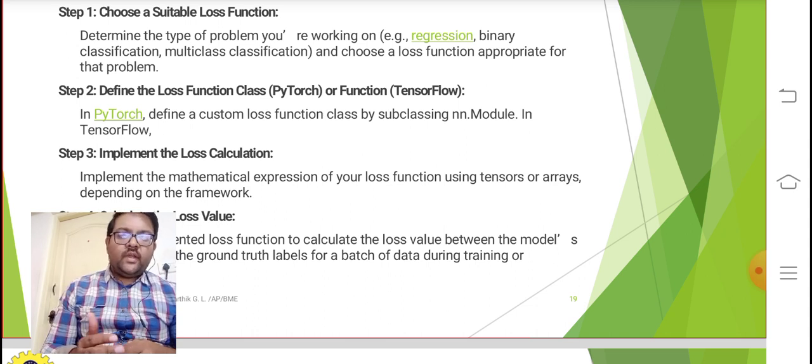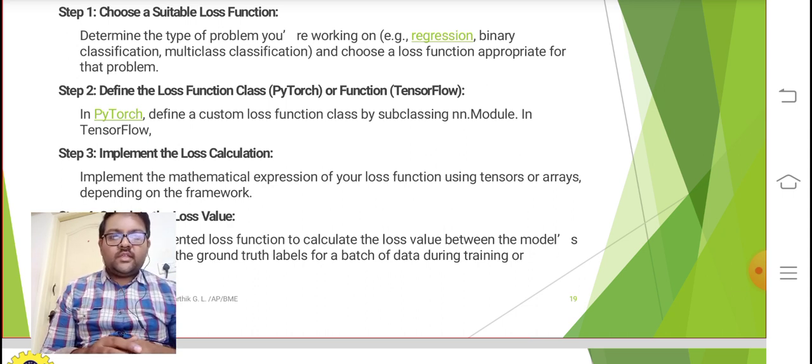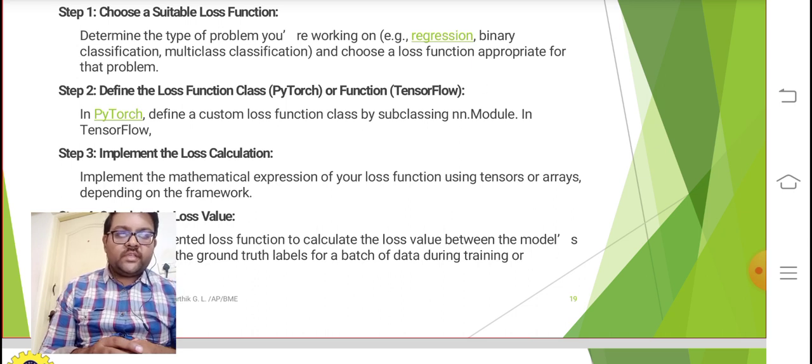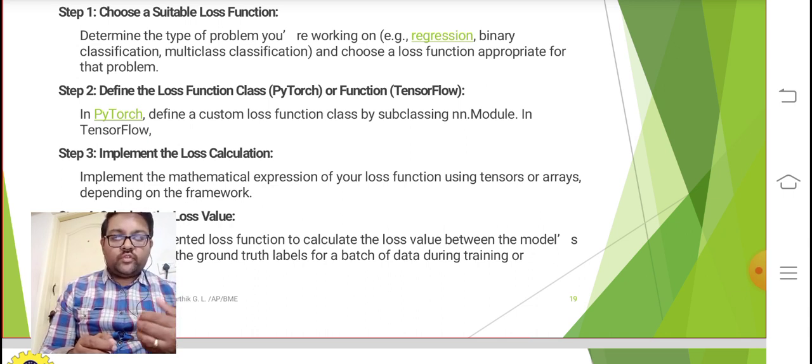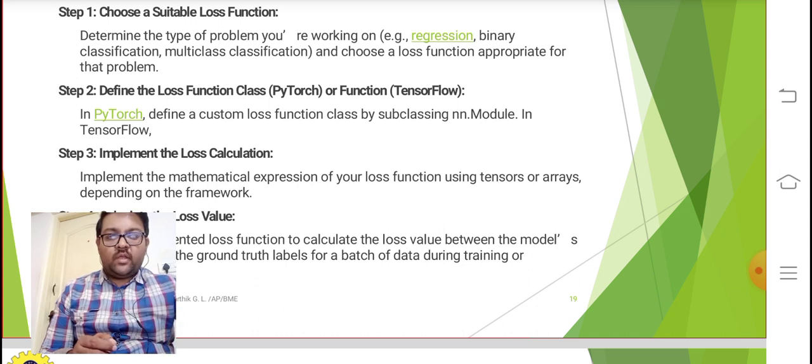Step 2: Define the loss function class using PyTorch or function in TensorFlow. In PyTorch we define a custom loss function class by subclassing NN module. In TensorFlow, implement the loss calculation. Implement the mathematical expression of your loss function using tensors or arrays depending on the framework.